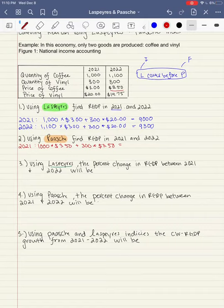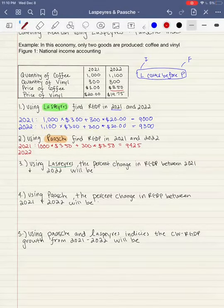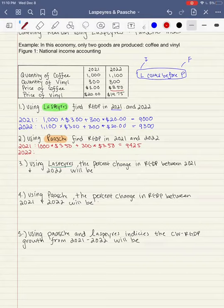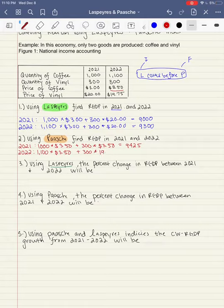And then this is going to give us 9425. Okay. And then in 2022, sorry about that. Obviously I'm running low on battery. So 2022, we're going to use the 2022 quantities times the 2022 price and the same thing for vinyl. And this was an error, so I'm sorry about this. I messed up this first one.